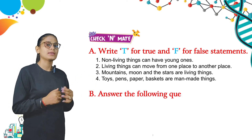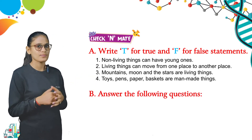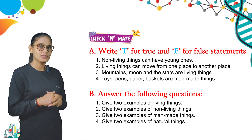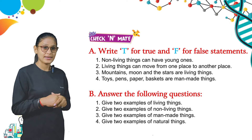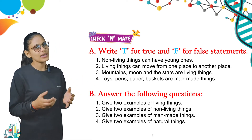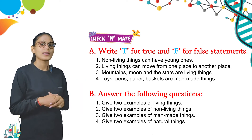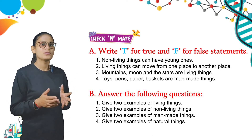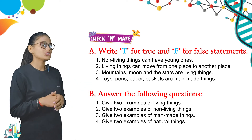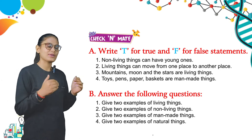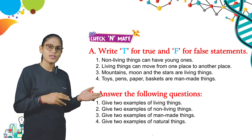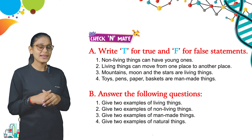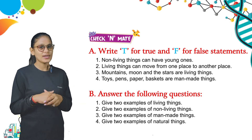Now students, come to Part B: answer the following questions. Question one: give two examples of living things. Write the answer in your notebook — human being, bird, tree. Question two: give two examples of non-living things — pen, paper. Question three: give two examples of man-made things — table and chair. Question four: give two examples of natural things — moon, stars.